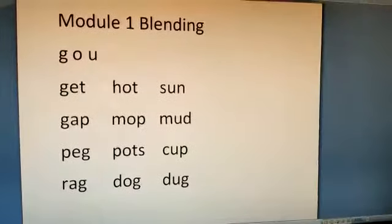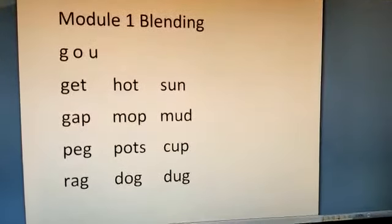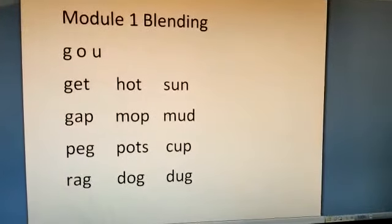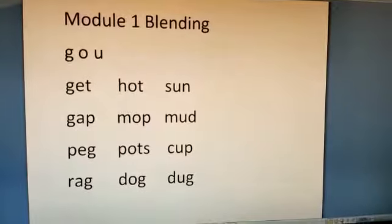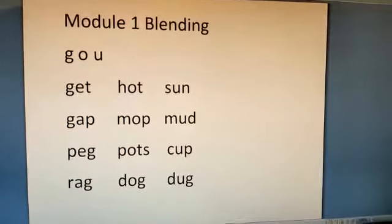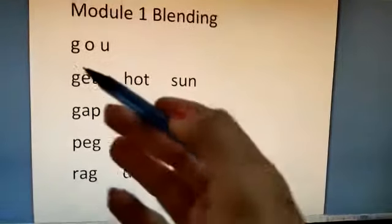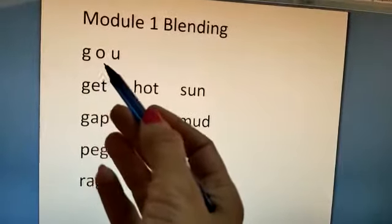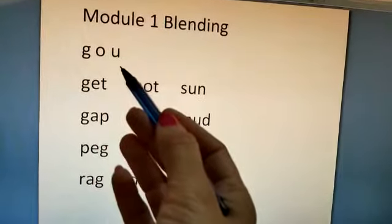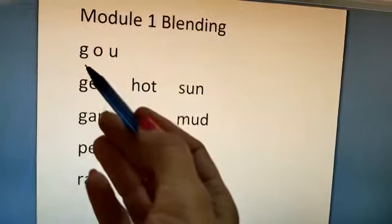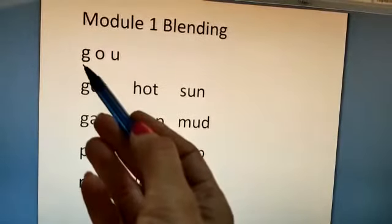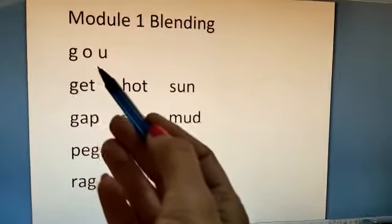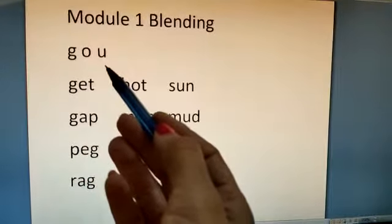Hello everybody. Welcome to Module 1 Blending. Today we are going to blend the letters G, O, U. Sounds being G, O, U.